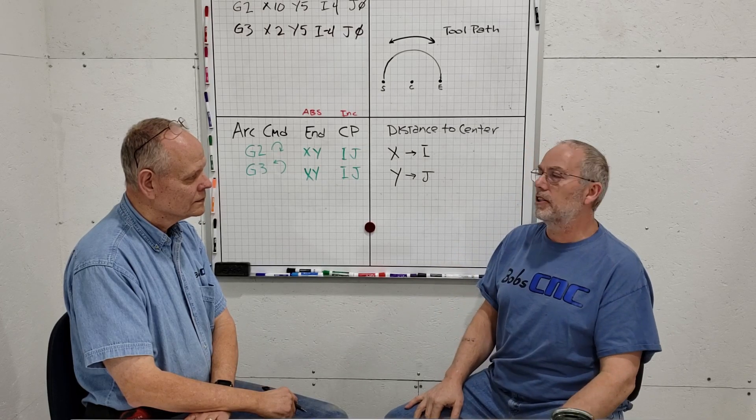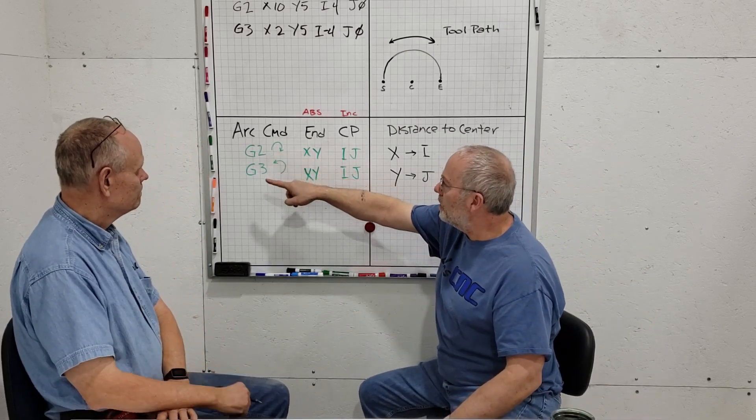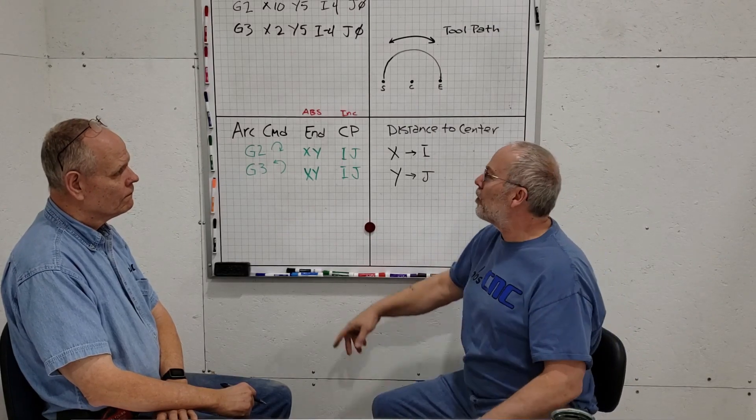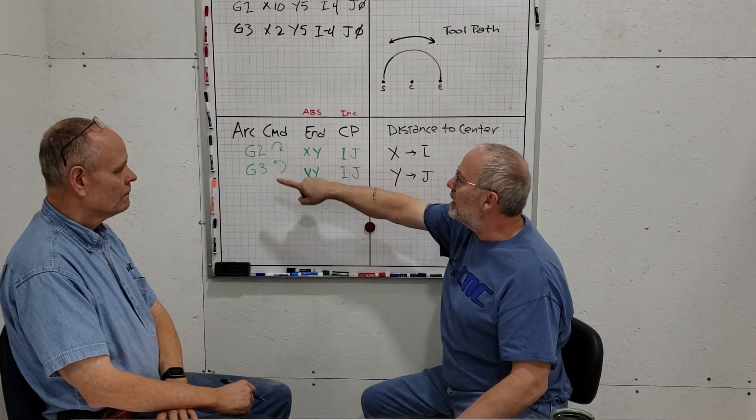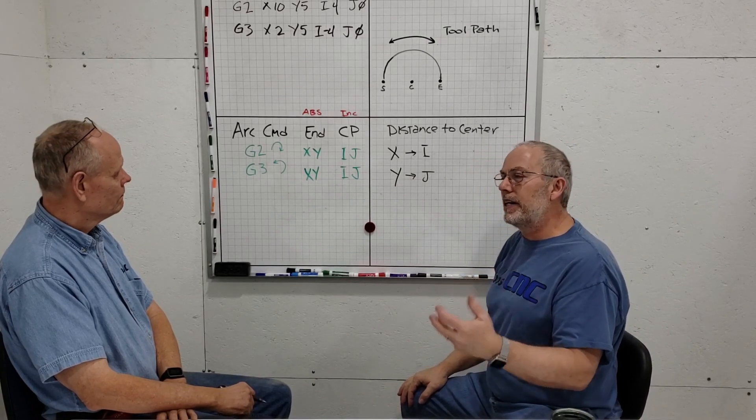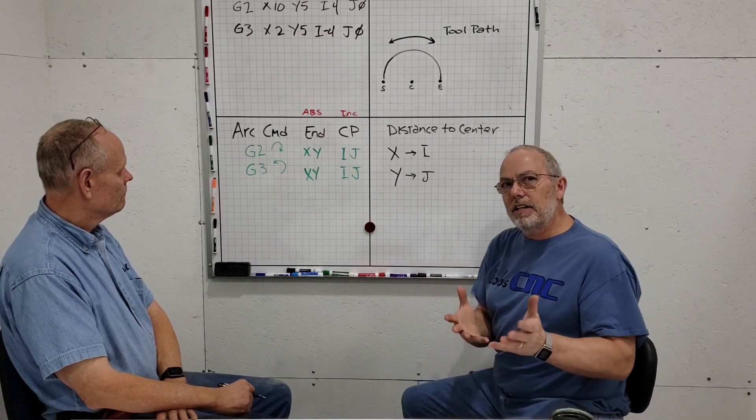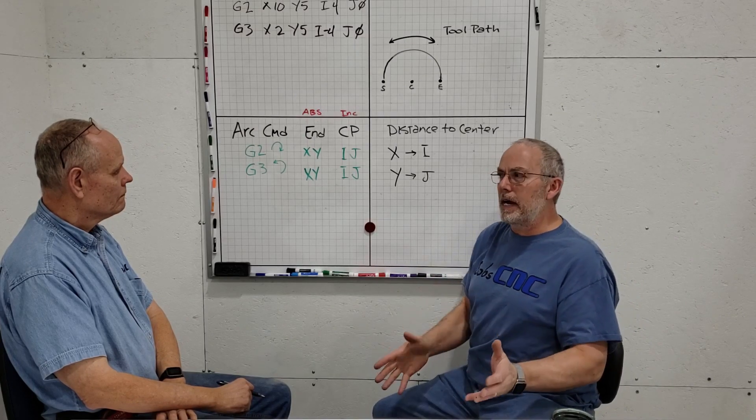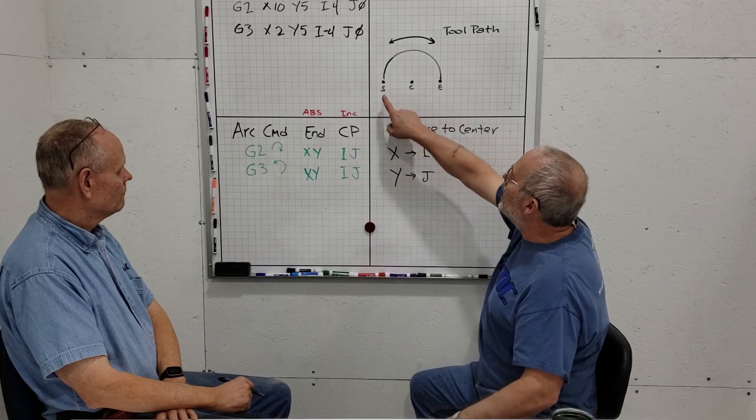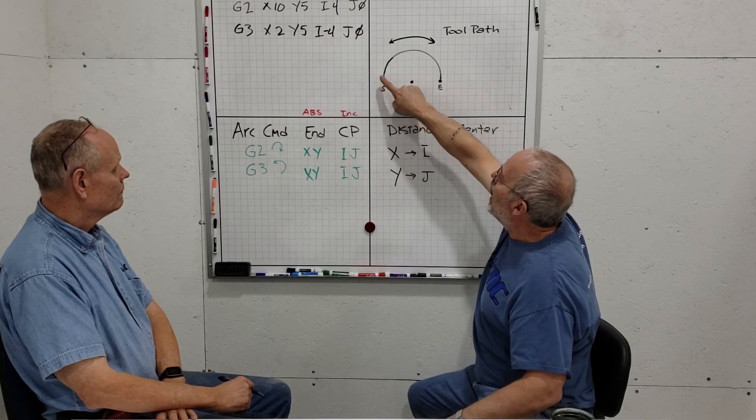There are actually two G-codes for arcs. The first is G2, the second is G3. They're exactly the same commands except one goes clockwise and one goes counterclockwise. G2 is clockwise, G3 is counterclockwise.